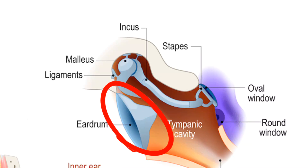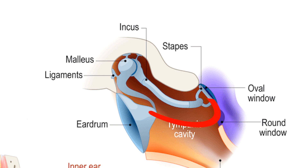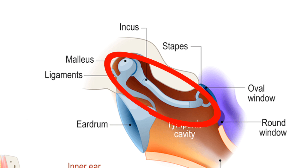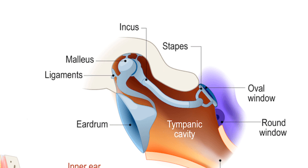The middle ear houses the eardrum and three tiny bones: the malleus, incus, and stapes. The eardrum vibrates when sound waves hit it, setting these tiny bones in motion. This mechanical energy is then transmitted to the inner ear.